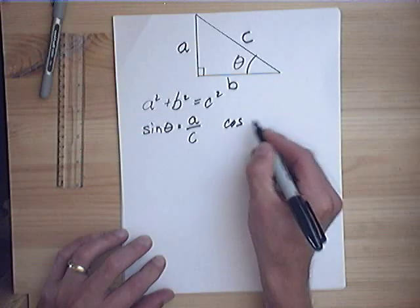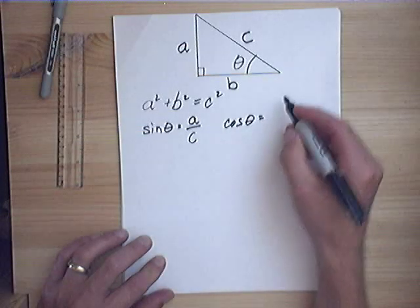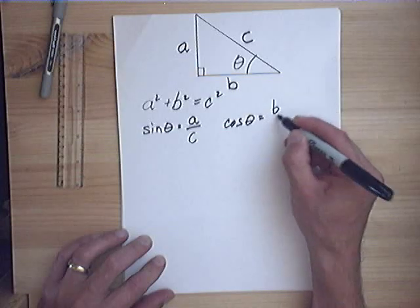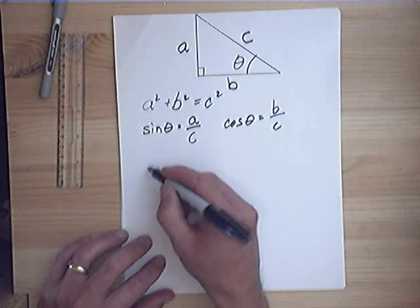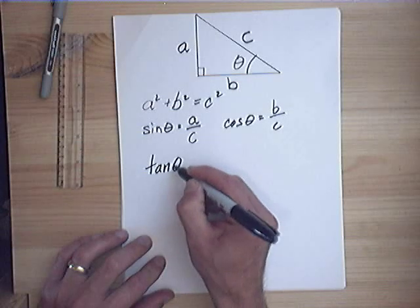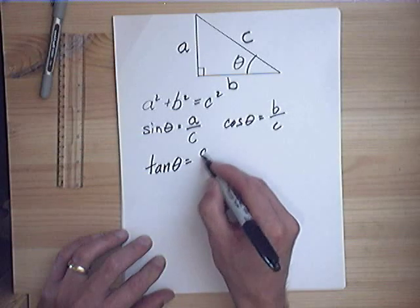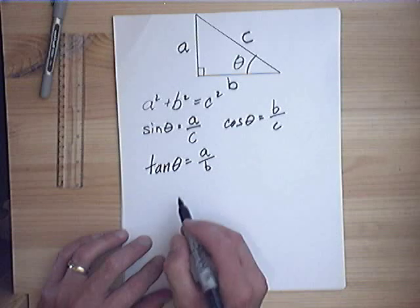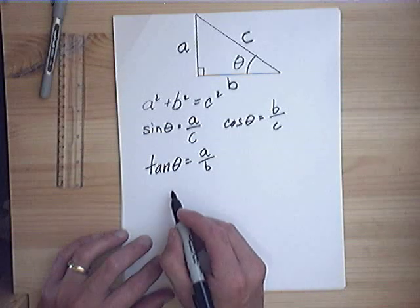The cosine of theta is known as the adjacent over hypotenuse. And the tangent of the angle is defined as opposite over adjacent. This brings us to the great Indian,